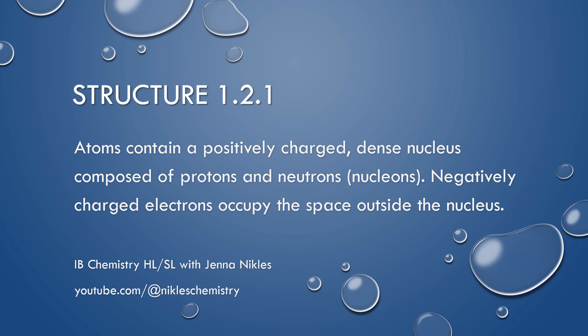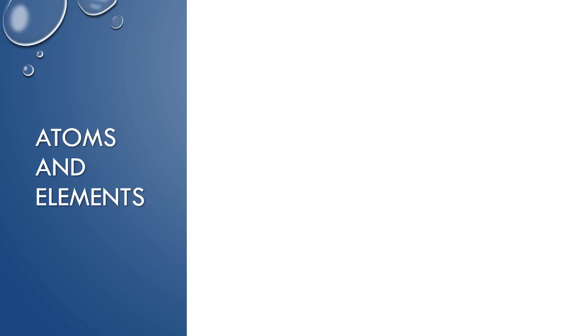In this section, 1.2.1, we're going to look at just the very basics about the positively charged dense nucleus and the negative electrons around the outside. To keep it really simple to start out with, you know that all matter is made up of atoms, and when you have different types of atoms, there are different types of elements.